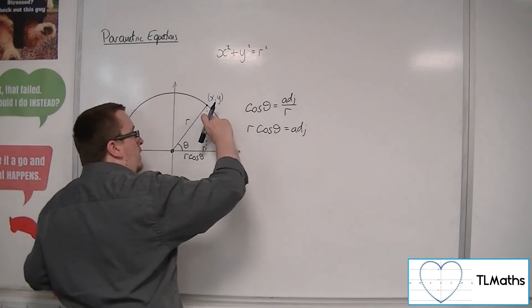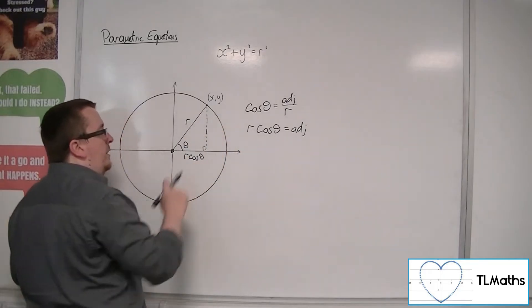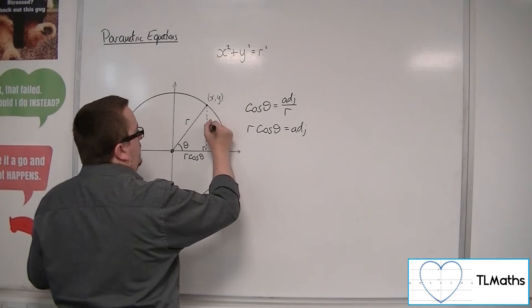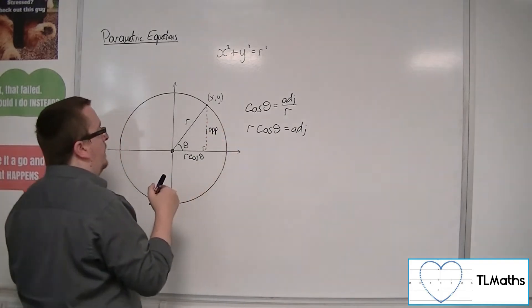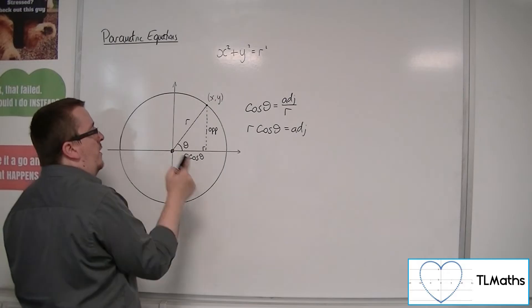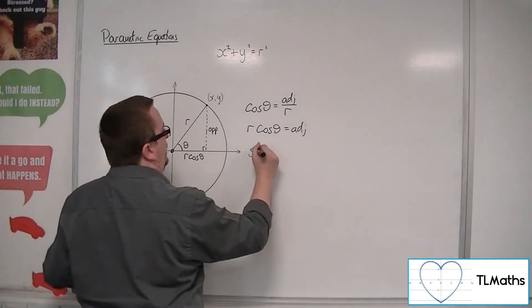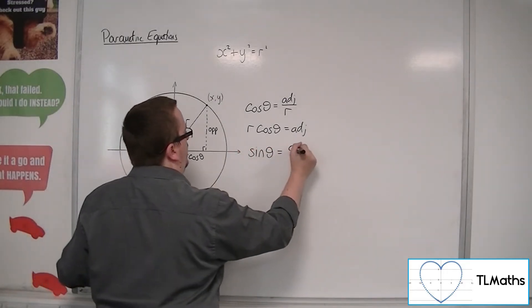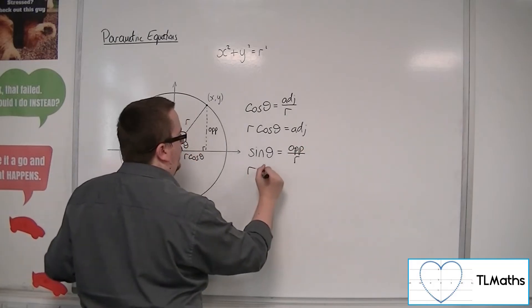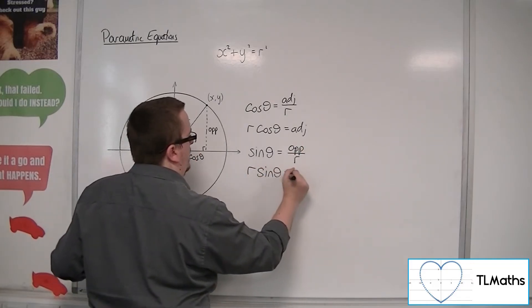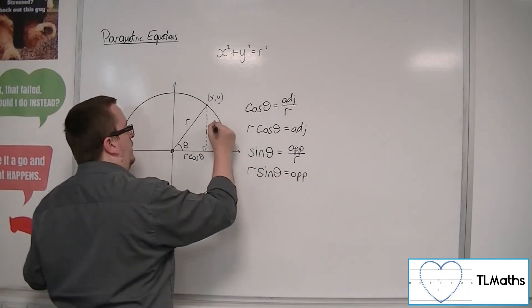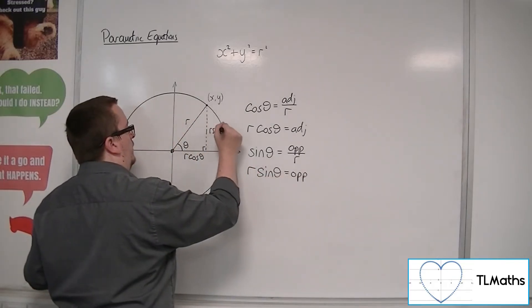Now, the opposite — the height of this triangle — we can write as the opposite. We've got r as the hypotenuse, so sin theta is equal to the opposite over the hypotenuse r. And so, r sin theta is your opposite.